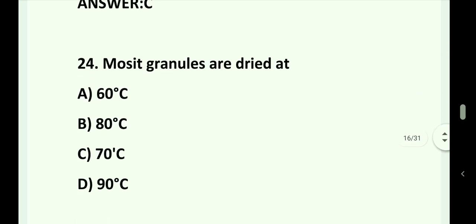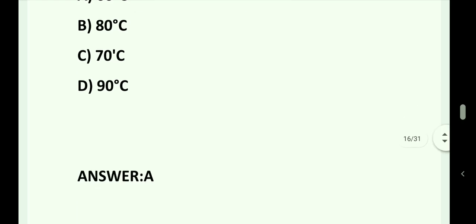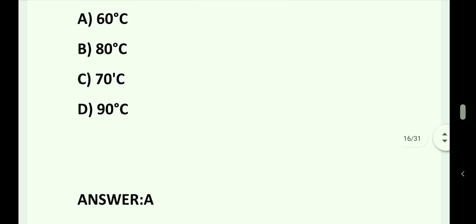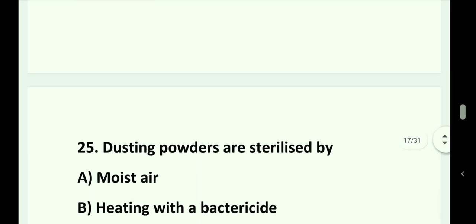Question number 24. Moist granules are dried at: Option A. 60 degrees Celsius. Option B. 80 degrees Celsius. Option C. 70 degrees Celsius. Option D. 90 degrees Celsius. Answer is Option A. 60 degrees Celsius.